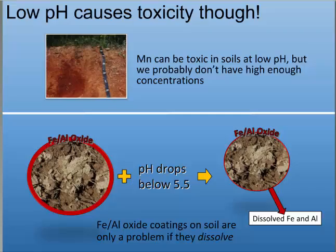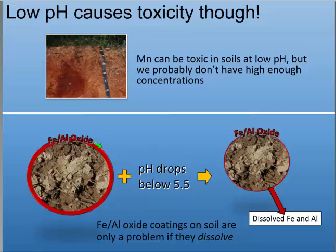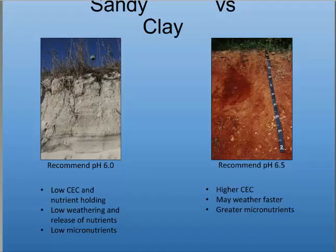Regarding toxicity: low pH causes toxicity. If you try to lower pH to keep manganese available, but have other elements like high zinc or iron in your soil from, say, added chicken litter, you risk a different problem. When pH drops below 5.5, iron oxide coatings on soil dissolve and release iron and aluminum into soil water, which can be toxic to plant roots. This only matters if you have a lot of these materials in your soil. In a very sandy soil low in iron and aluminum, you might push pH a little lower to make micronutrients available with less toxicity risk.